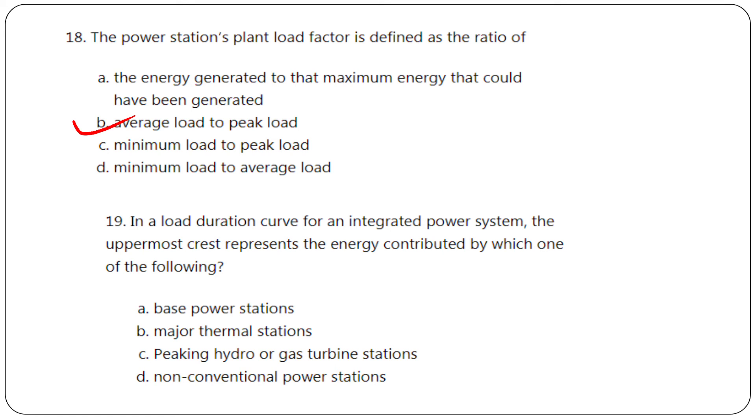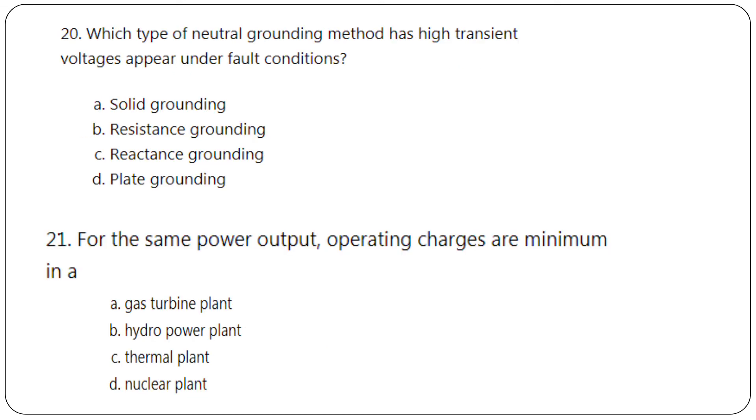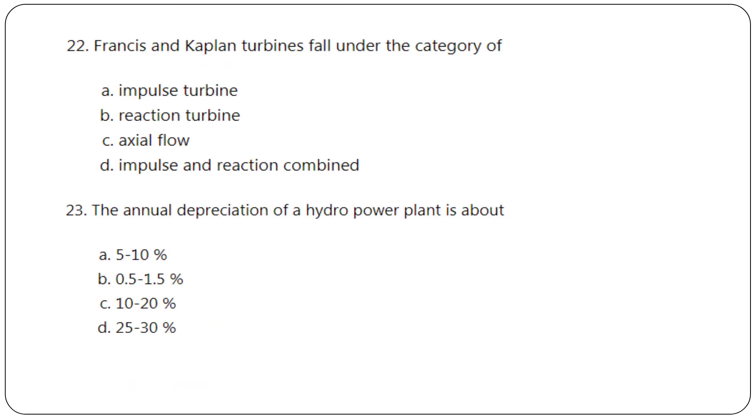Loaded duration curve for an integrated power system: the uppermost crust represents energy contributed by non-conventional power stations, option D. Which type of neutral grounding method has high transient voltage appearing under fault conditions? Option C, reactance grounding method. For the same power output, operating charges are minimum in hydro, option B.